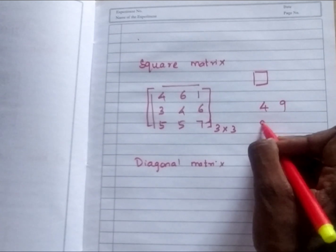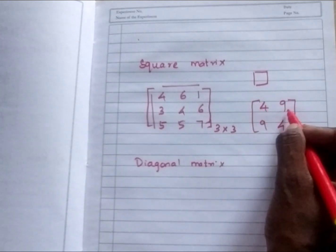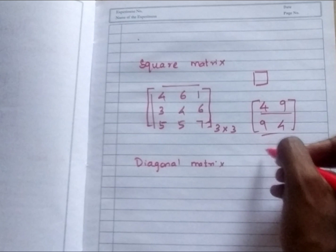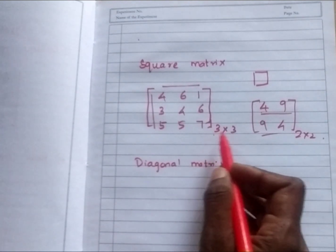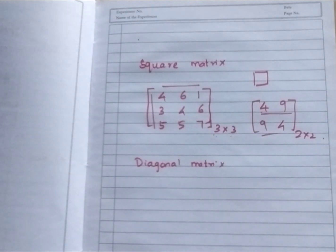This also has square matrix only, because this side is 2 rows, 2 columns. So square is even. You can write 4 cross 4, 5 cross 5. This number, both row and column are same. It is called square matrix.